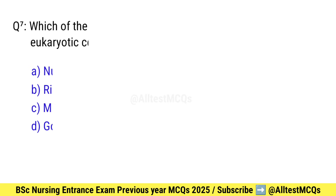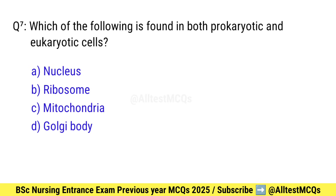Question number 7. Which of the following is found in both prokaryotic and eukaryotic cells? Correct option is B: Ribosome.